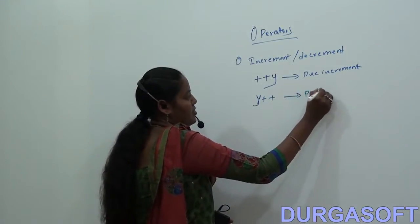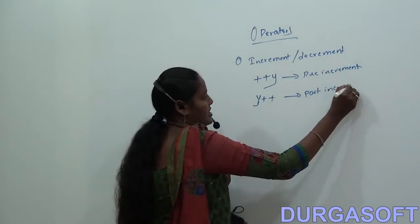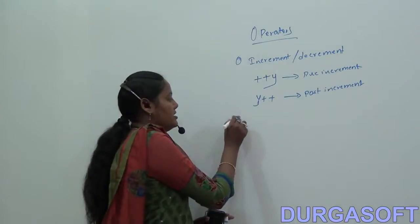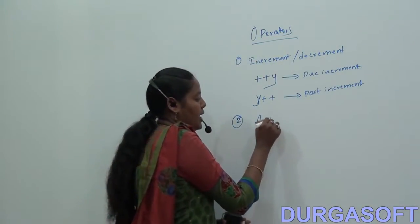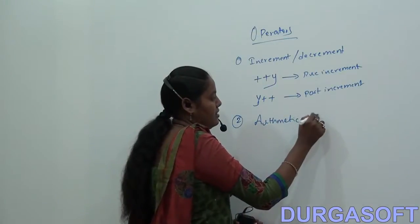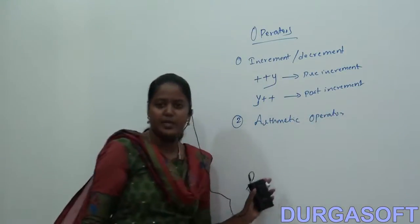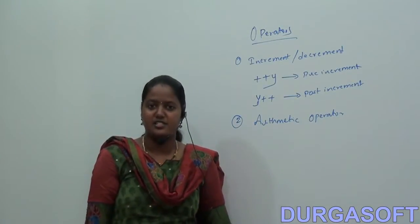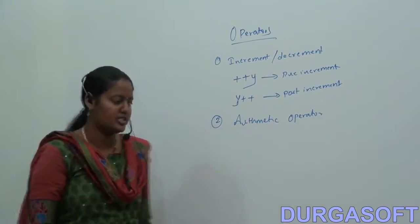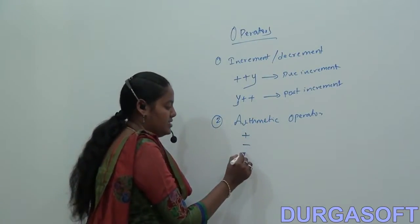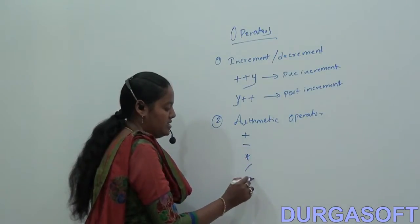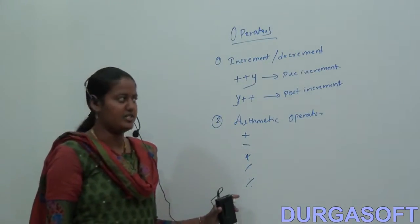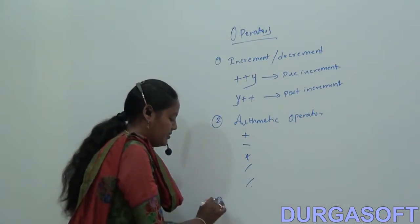Post-increment works the same way, and similarly we have pre-decrement and post-decrement. The second operator is the arithmetic operator. The arithmetic operator is used to perform addition, subtraction, multiplication, division, and modulus. These are all arithmetic operations.